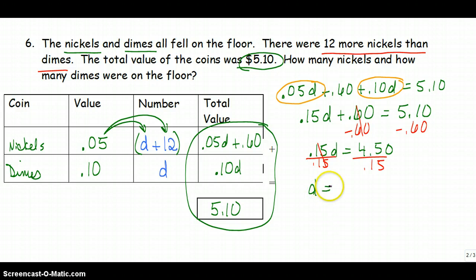Now I'm going to divide both sides by .15. So now I have d is equal to $4.50 divided by .15. That gives me 30. So I know that I have 30 dimes.